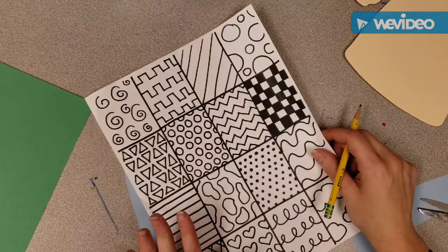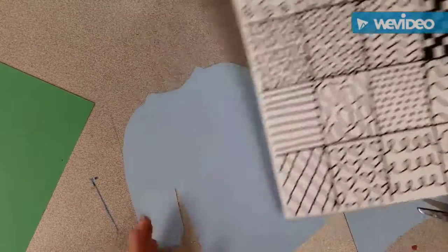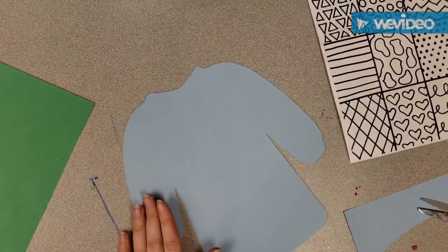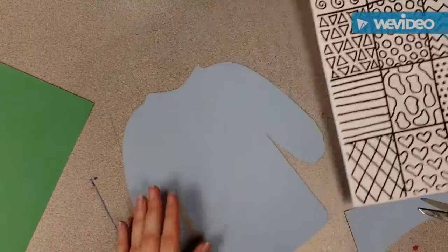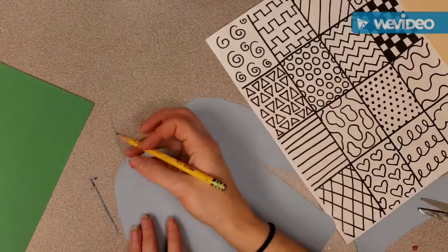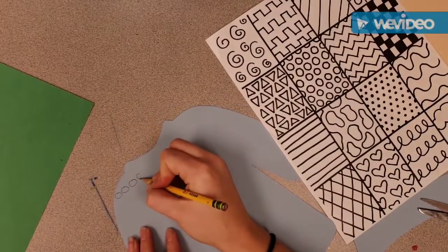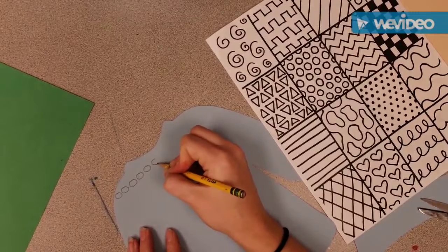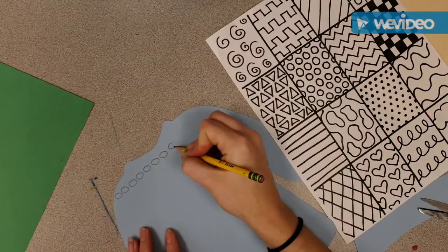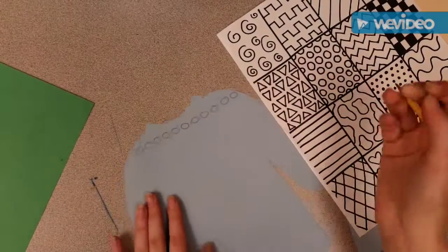Remember, a pattern is a line or a shape that repeats itself. So I think, even though it's not on this paper, I'm going to do circles like this one across the top of my sweater. Once I'm done drawing all of my patterns, I'm going to go ahead and sharpie everything that I have drawn.